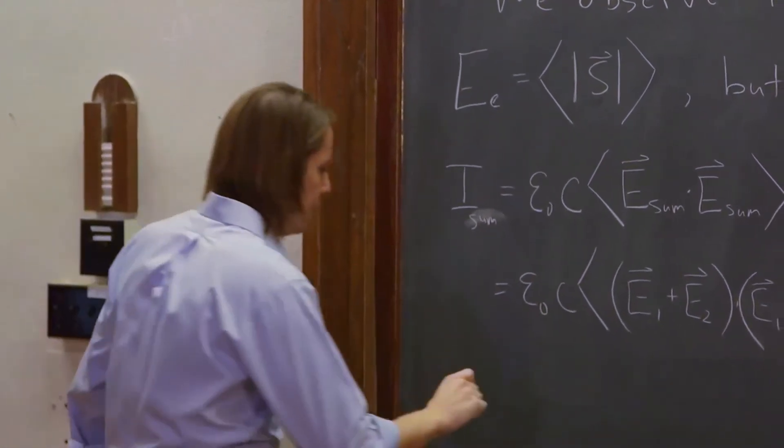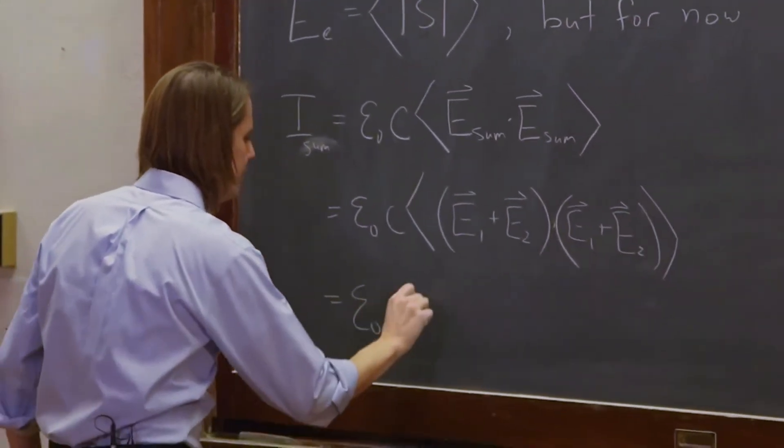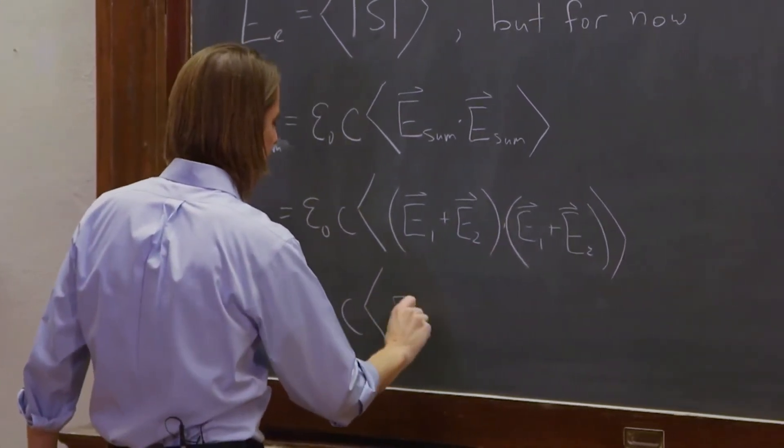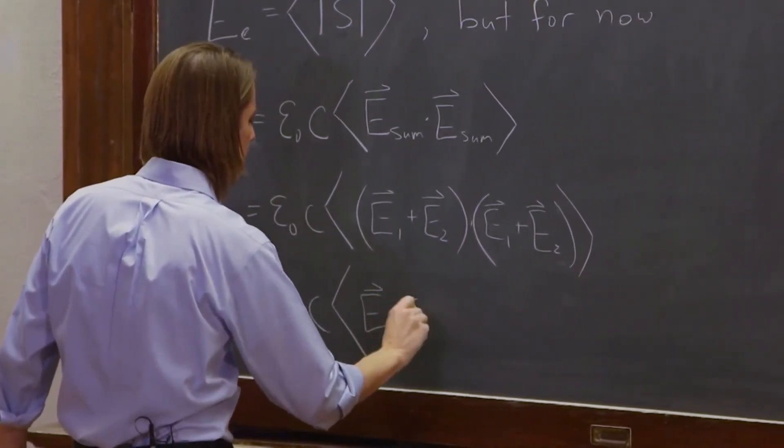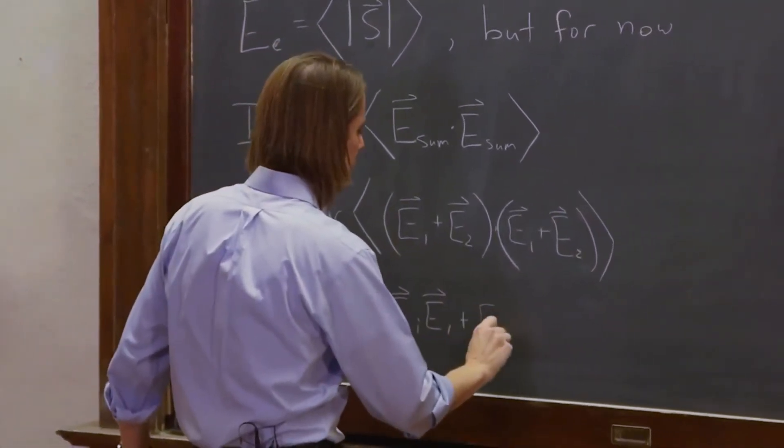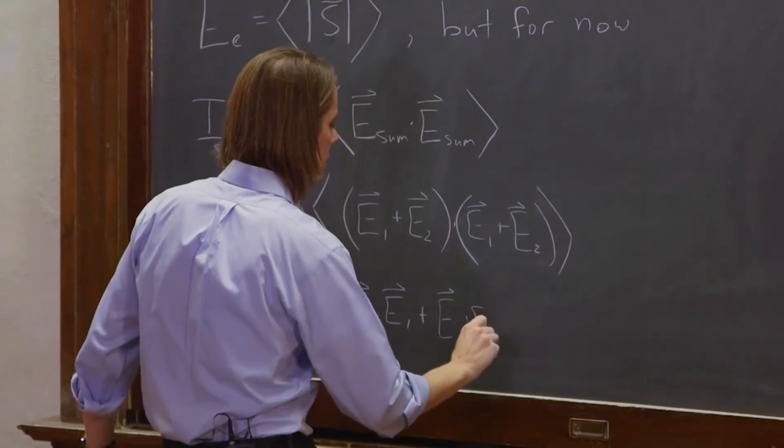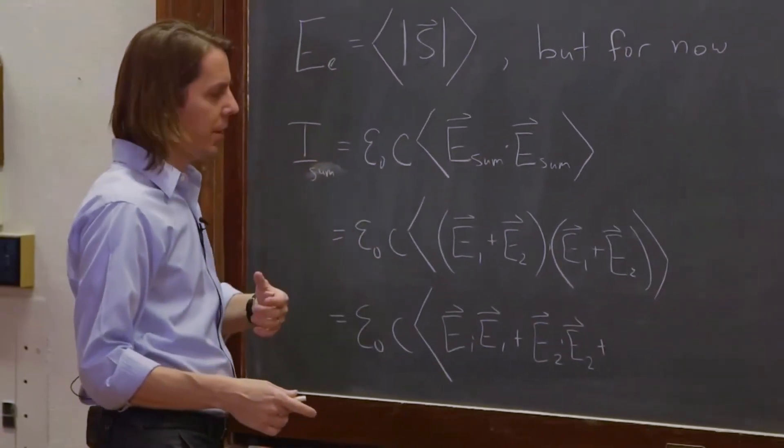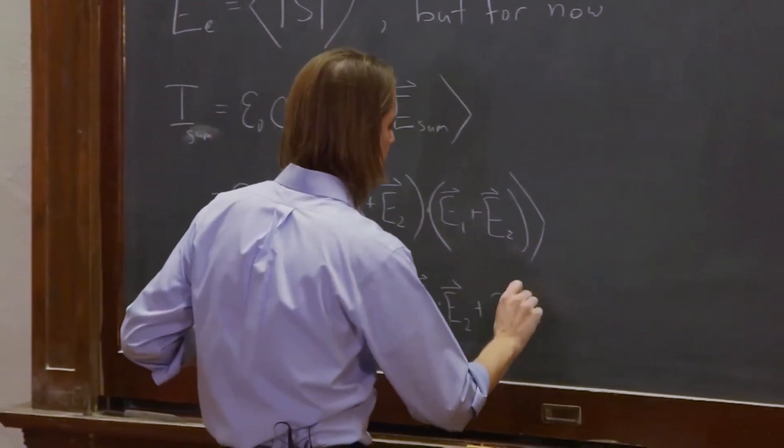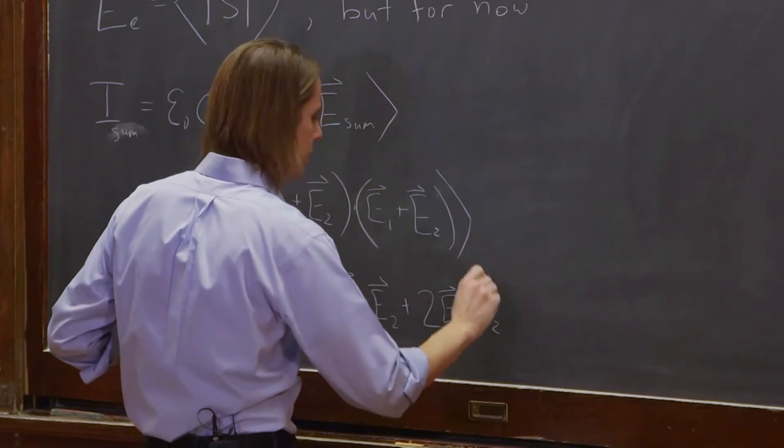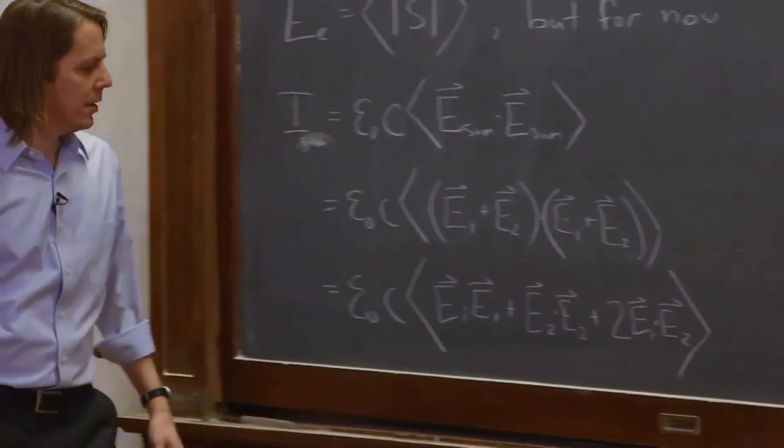So let's keep doing algebra. Epsilon_0 C times the time average of E1 dotted with itself plus E2 dotted with itself plus the cross term is E1 dotted with E2. And there's two of those, two E1 dot E2, like that. Because A dot B is B dot A.